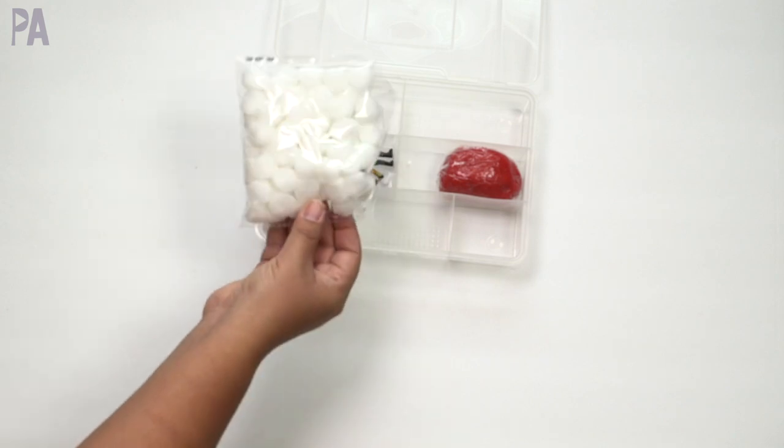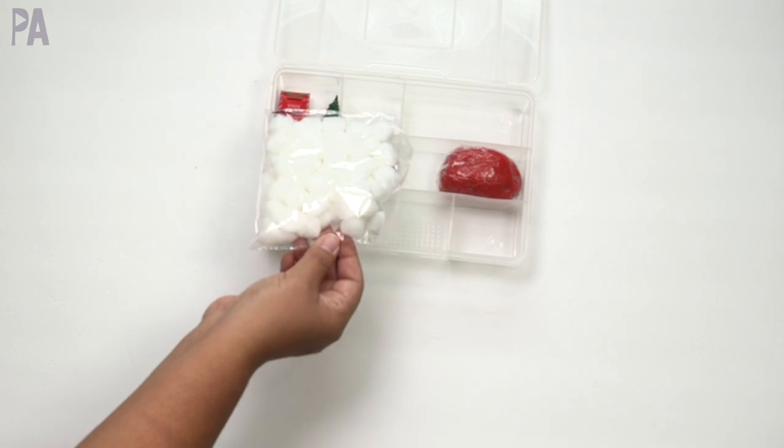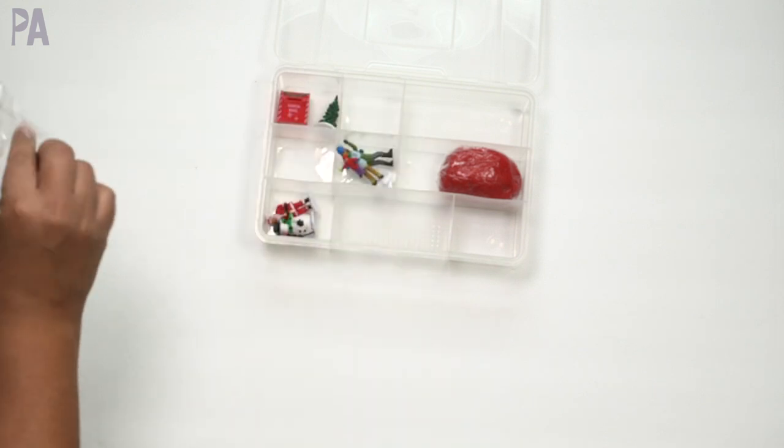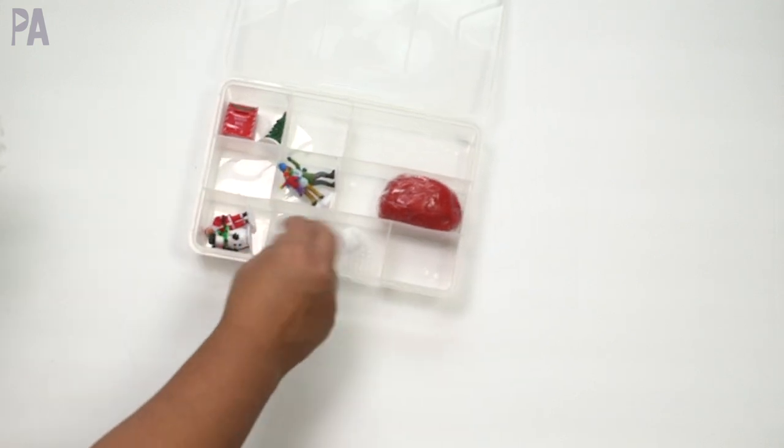Pom poms right now are at Dollar Tree. You can buy them in the individual colors in the craft section, or you can get the multiple color, the red, white, and green in the Christmas section. So depending on what you want, you can do that. Or if you have your own already, you can just take out your little white ones and put them in.